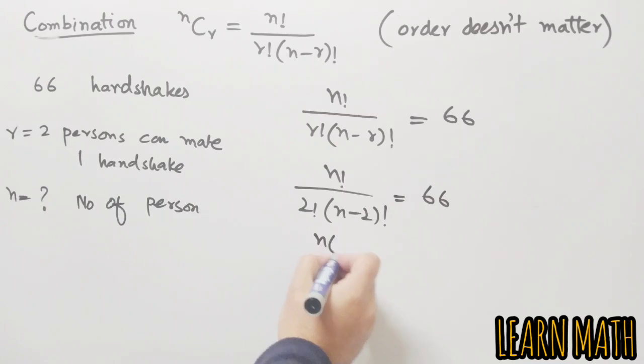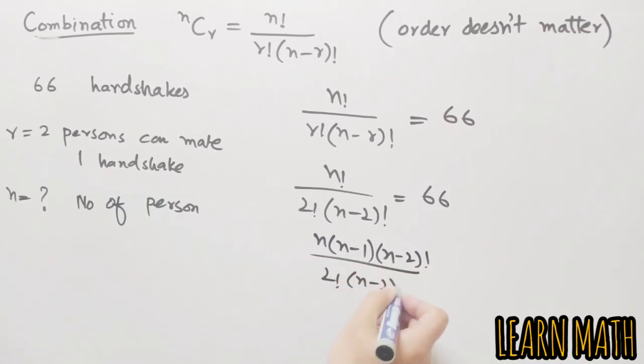Now we will simplify. n into n minus 1, n minus 2 factorial divided by 2 factorial, n minus 2 factorial is equal to 66. We will cancel this and multiply 2 with 66, so n into n minus 1 is equal to 132.